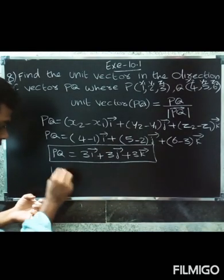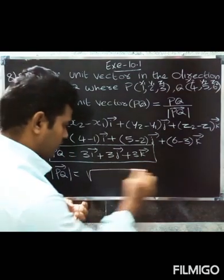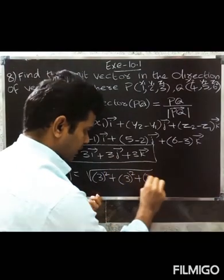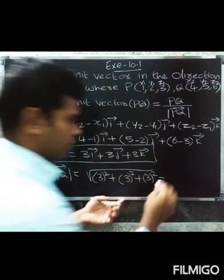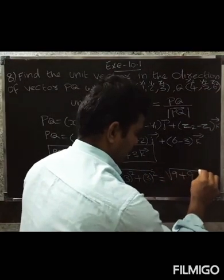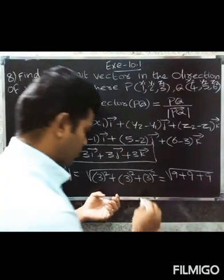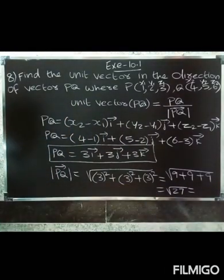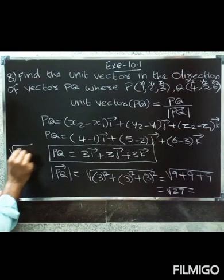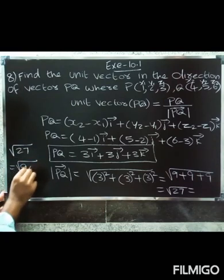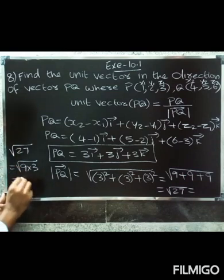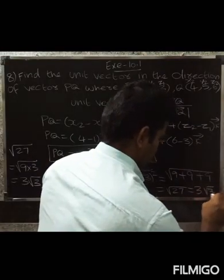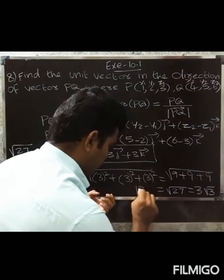The modulus of PQ vector is the square root of the sum of squares of the coefficients. That gives us the square root of 27, which equals square root of 9 times 3, so root 9 is 3, giving us 3 root 3. This is the modulus of PQ vector.